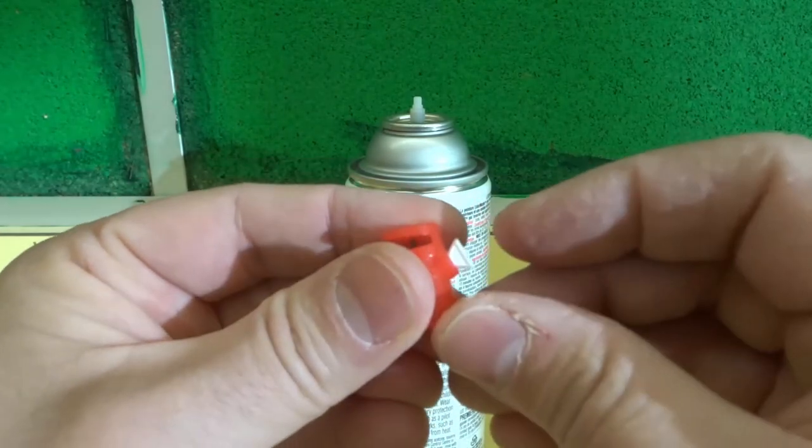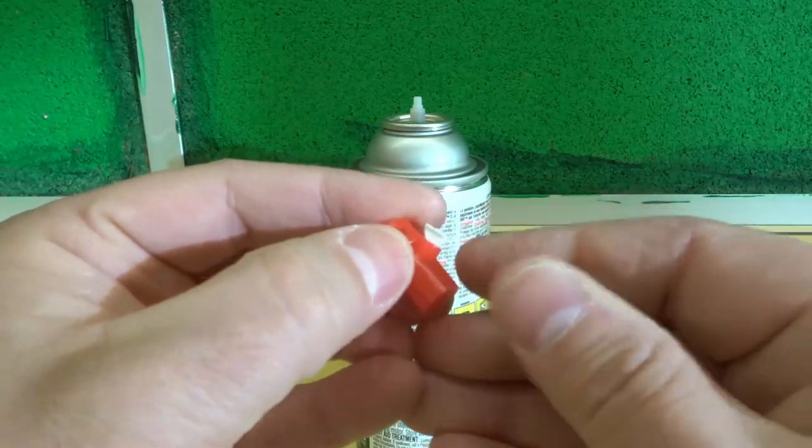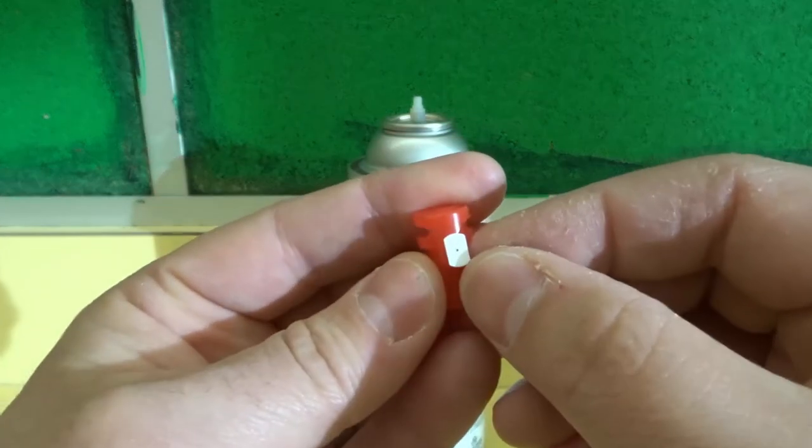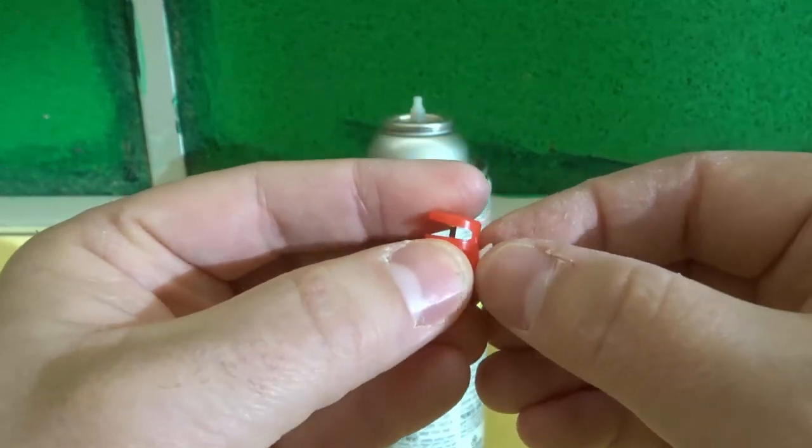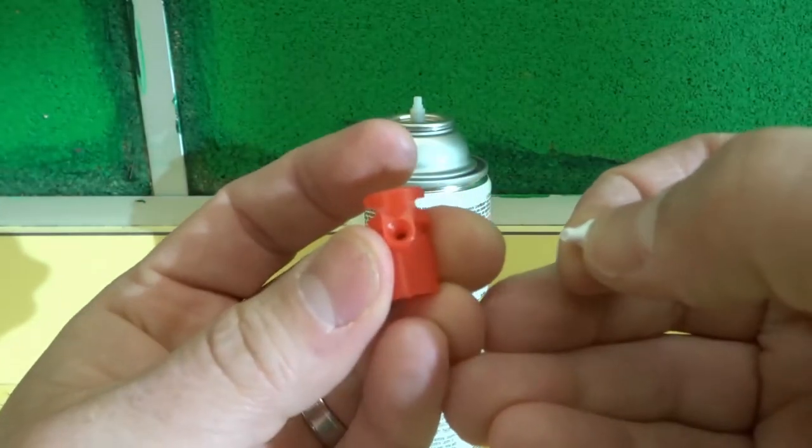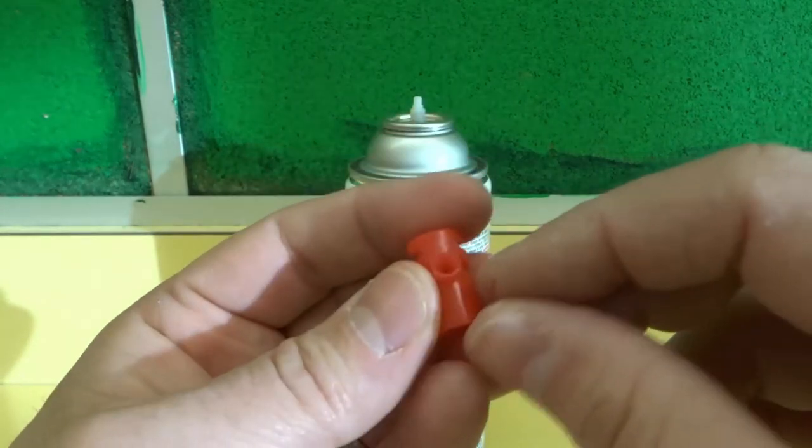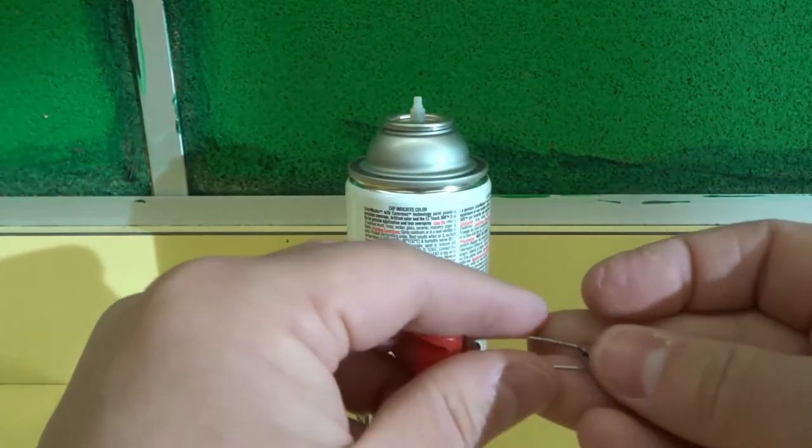And the second one is going to be over here where it sprays out of. So the first one is where the spray paint goes into and then where it comes out of. On this one right here, you can see there's a really fine little nozzle. But what I can do is I can untwist this and pull it off just like that. And that gives us access to the opening right there. So you'll probably be able to see the clogs.